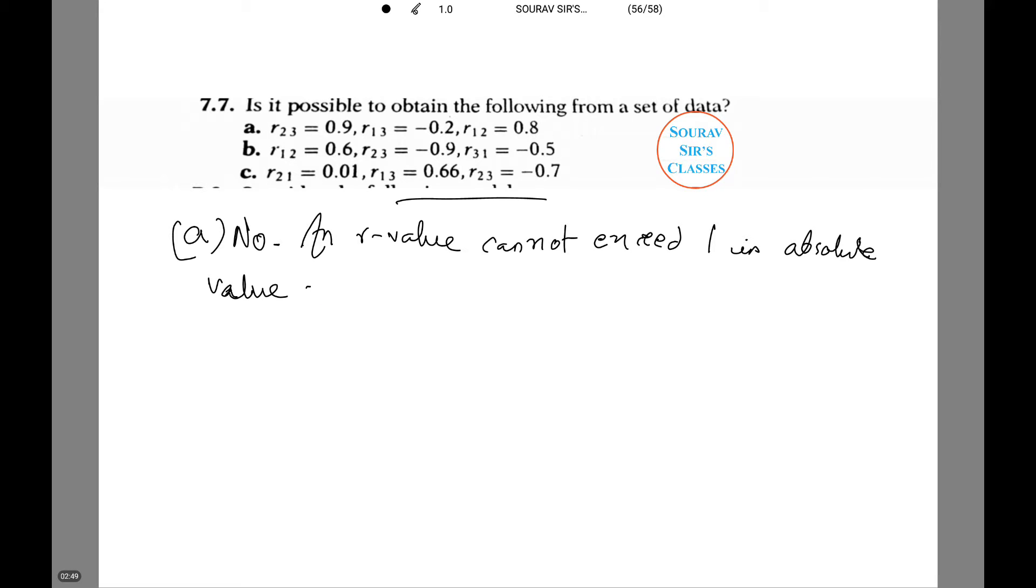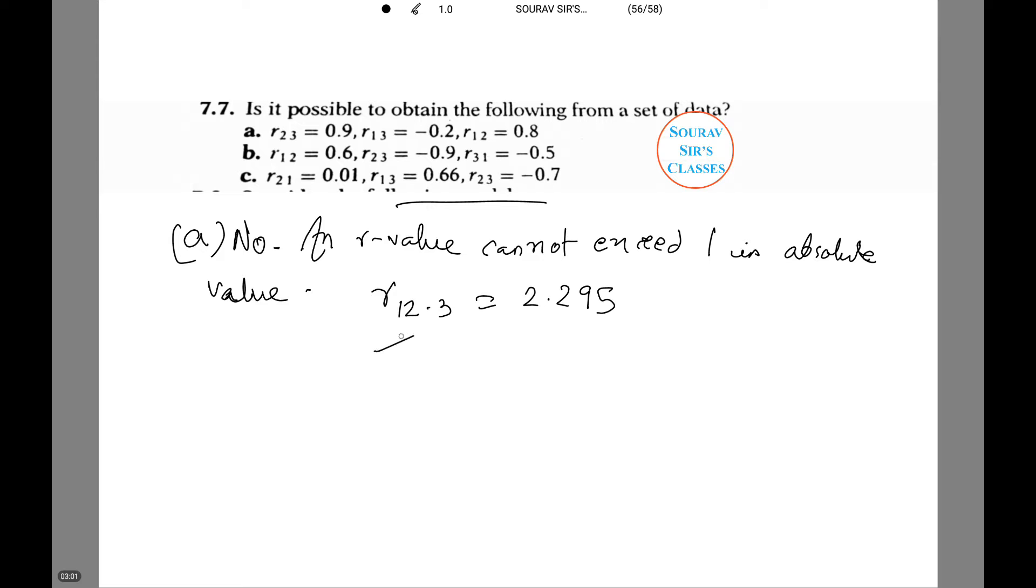Now plugging the given data, we can verify that R12.3 equals 2.295. This one is logically impossible. Thus the answer will be no. Let's see what happens for number B.